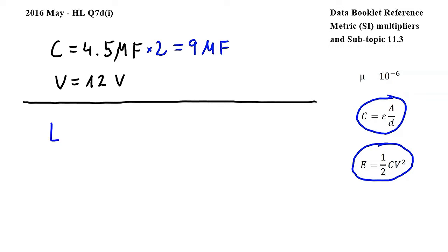Substituting, we get E equals one half times the capacitance, so times 9 microfarad, which I will convert into farads by using this conversion from the metric multiplier section of the data booklet, giving me 9 times 10 to the power of negative 6 farad, multiplied by 12 squared.